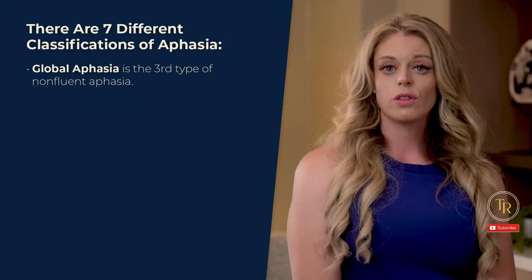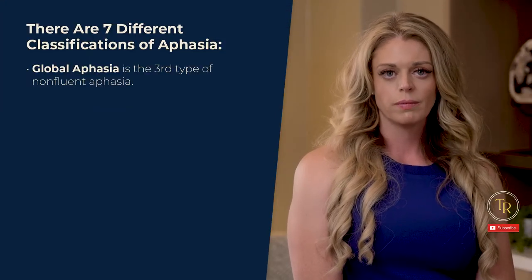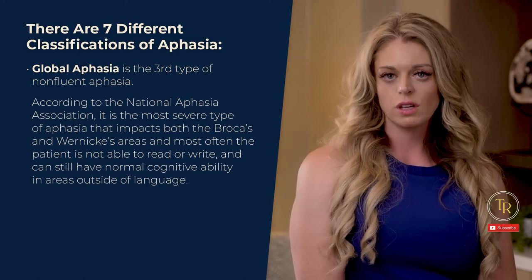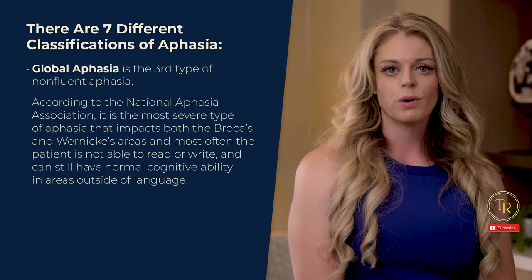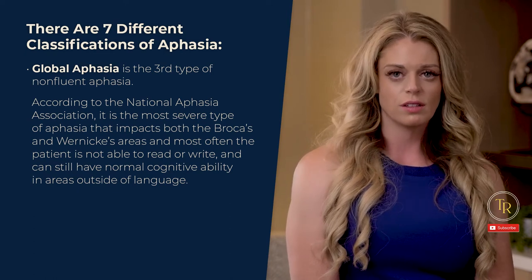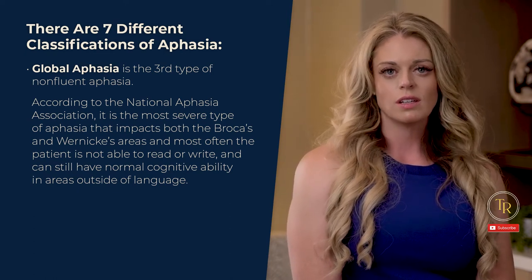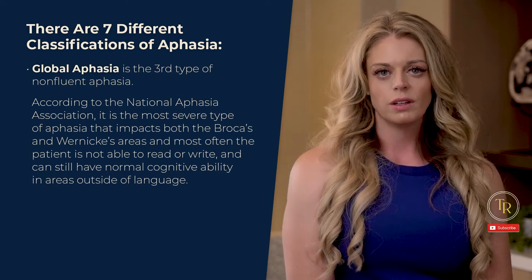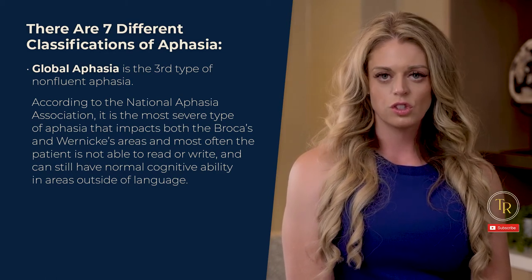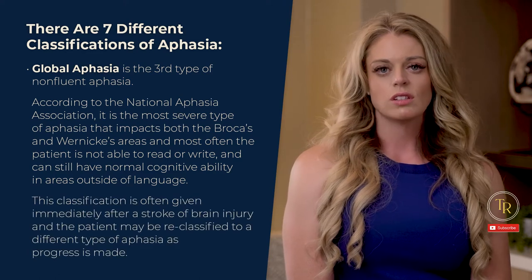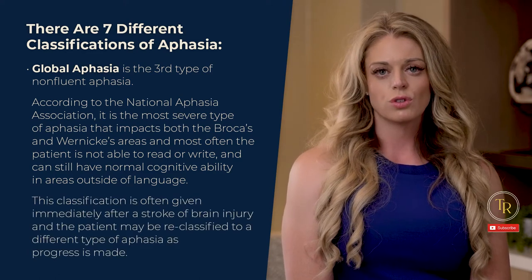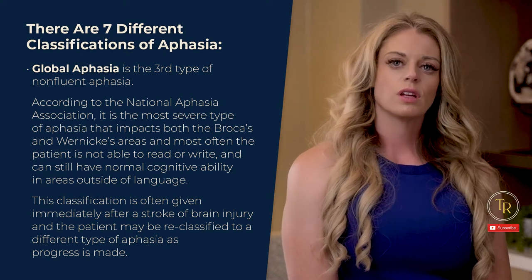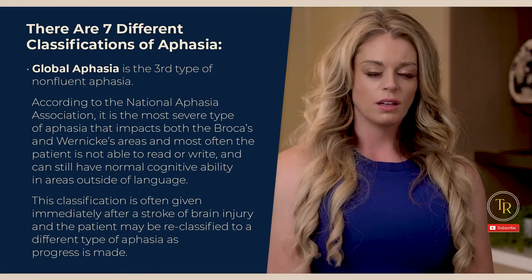Global aphasia is the third type of non-fluent aphasia. According to the National Aphasia Association, it is the most severe type, impacting both Broca's and Wernicke's areas. Most often the patient is not able to read or write, yet can still have normal cognitive ability in areas outside of language. This classification is often given immediately after a stroke or brain injury, and the patient may be reclassified to a different type of aphasia as progress is made.